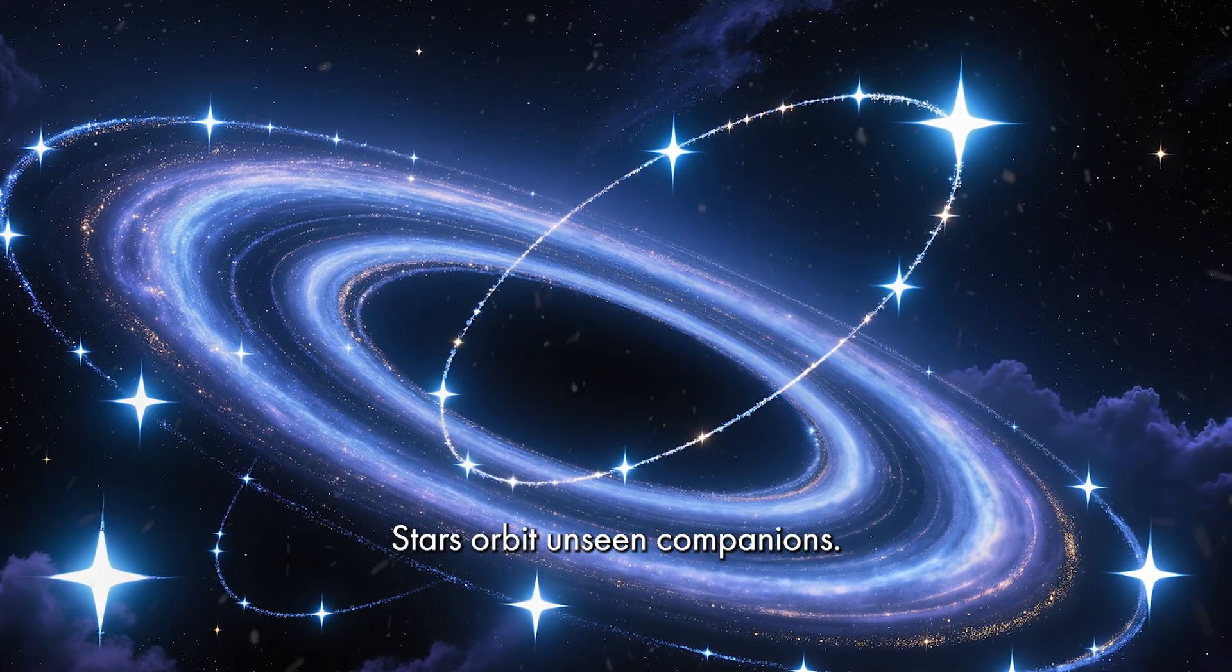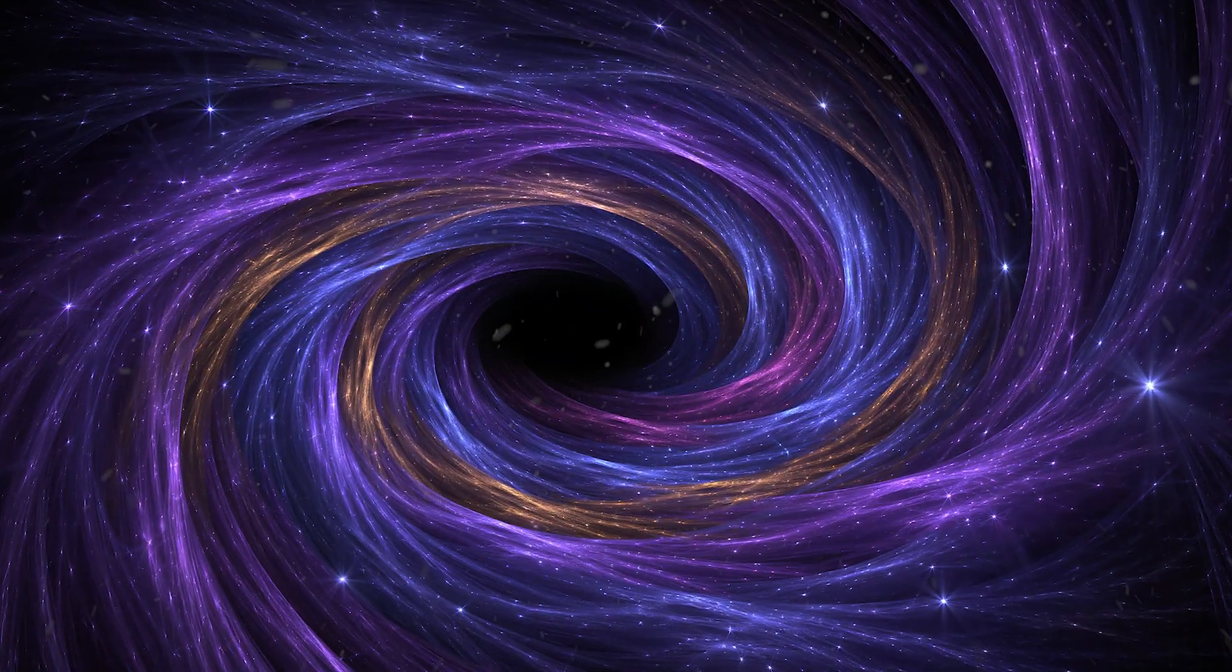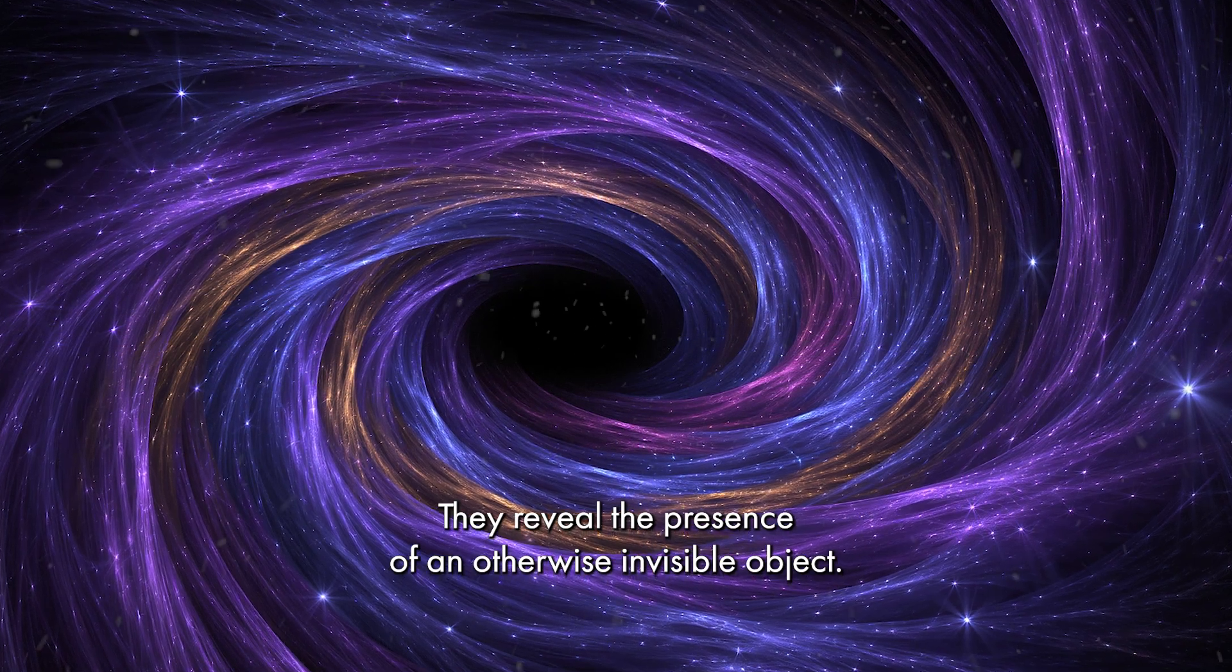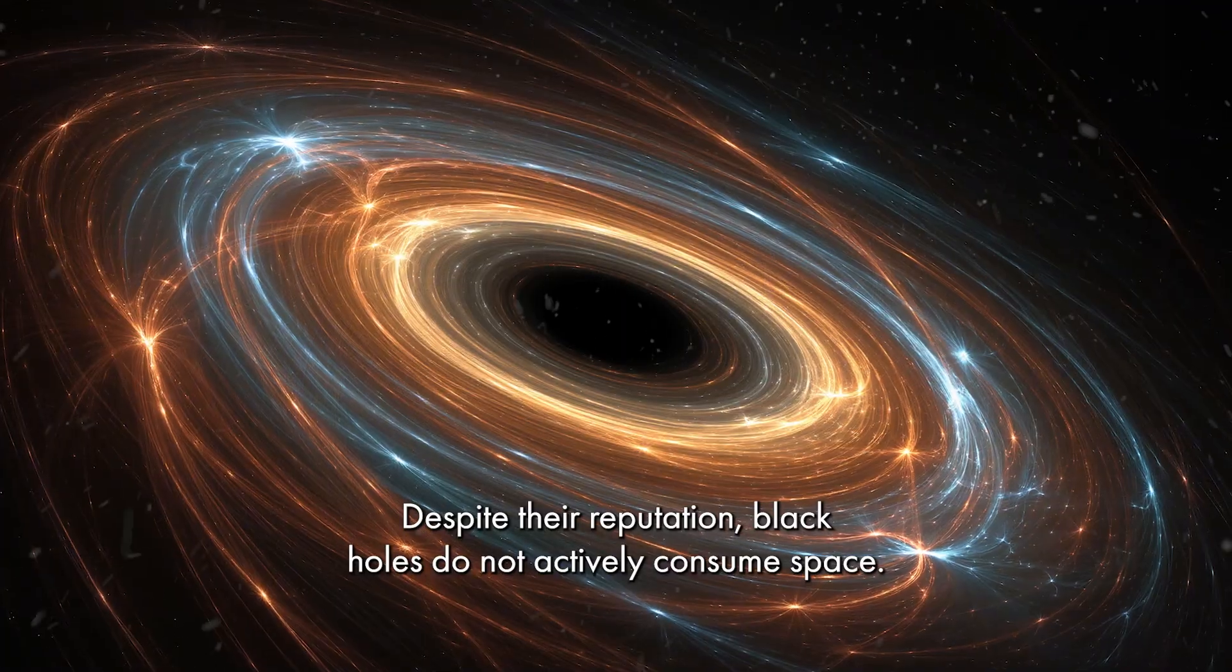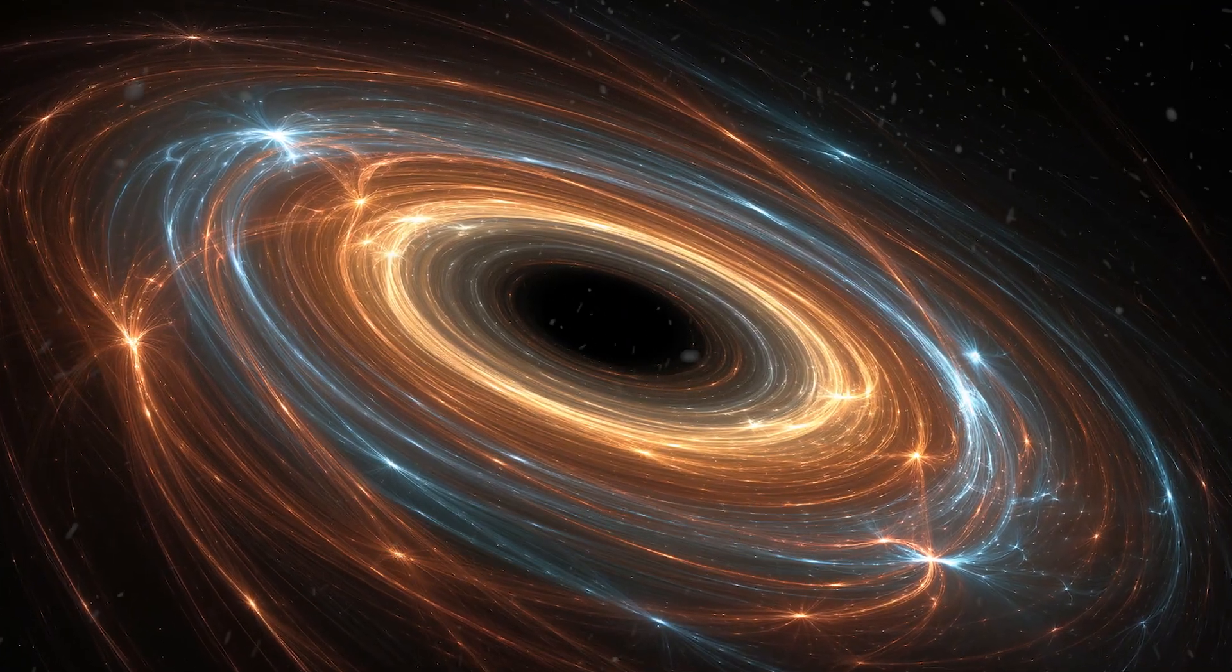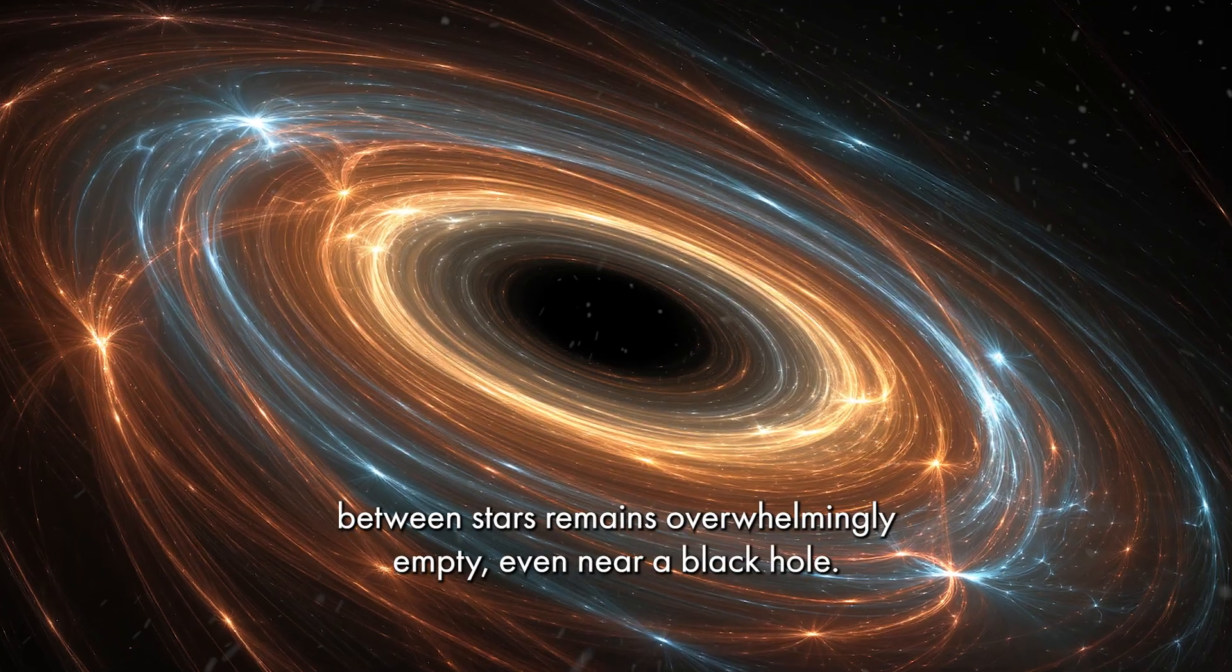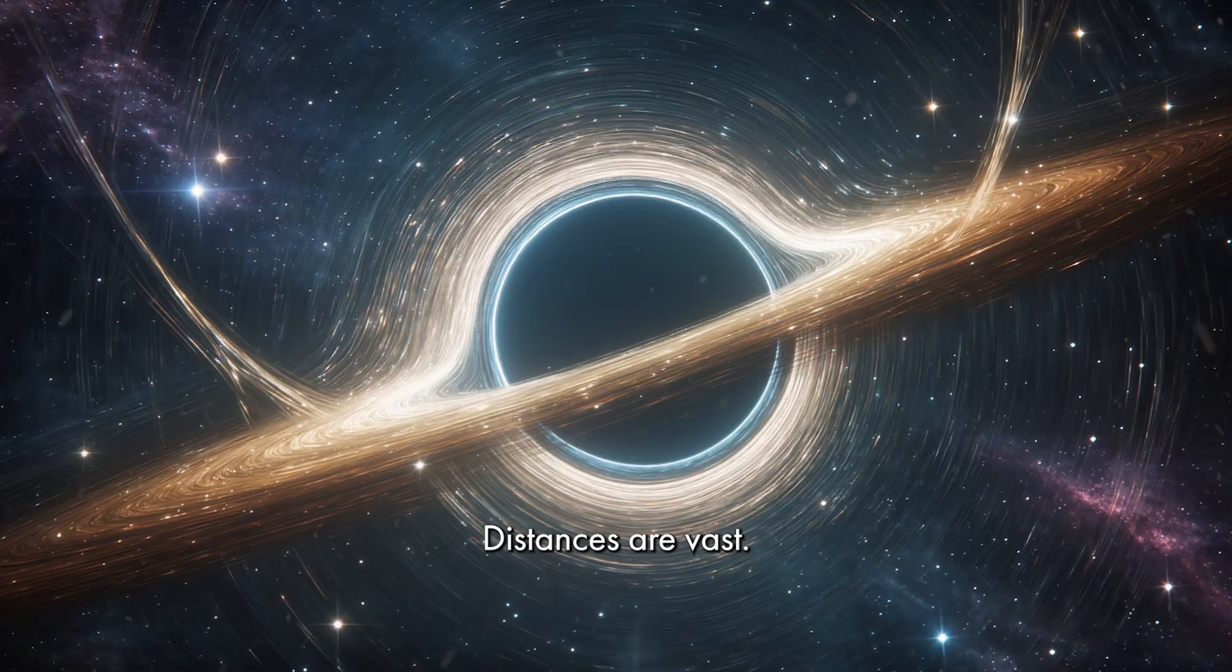Stars orbit unseen companions. Gas spirals inward, heating to extreme temperatures. Accretion disks form glowing rings of plasma. They reveal the presence of an otherwise invisible object. Despite their reputation, black holes do not actively consume space. They only affect what comes too close. The space between stars remains overwhelmingly empty. Even near a black hole, distances are vast.